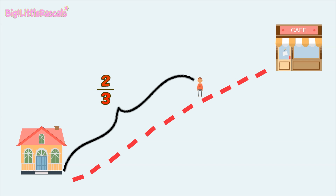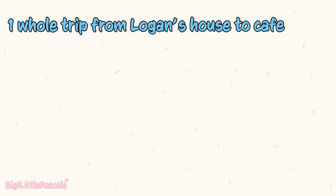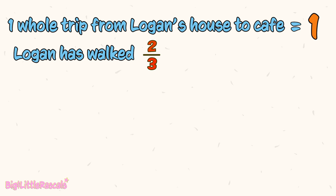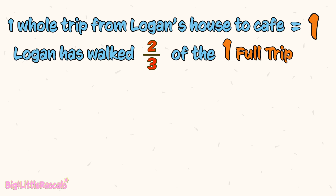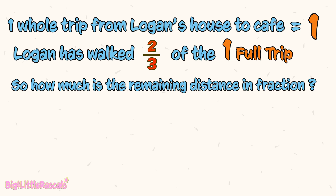When we met Logan, he was on the way to the cafe and he had walked two-thirds of his total trip from his house to the cafe. One whole trip represents one full trip from Logan's house to the cafe, and we can say that as one. But Logan has only walked two-thirds of the one full trip. So, the remaining distance left in fraction is one minus two-thirds.